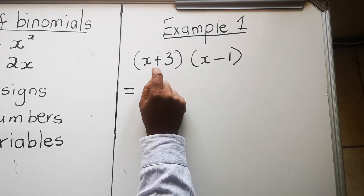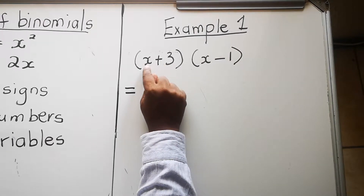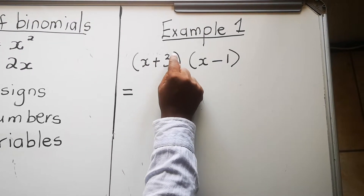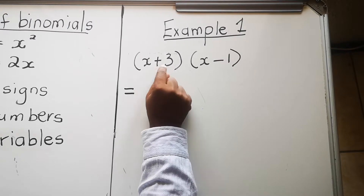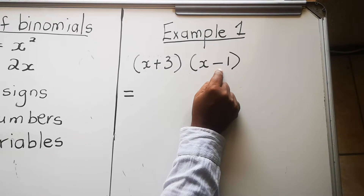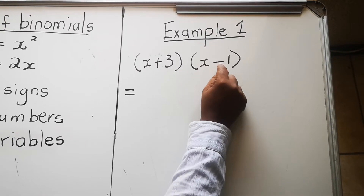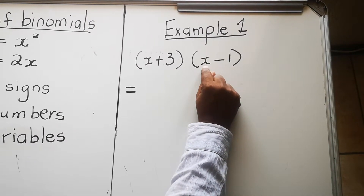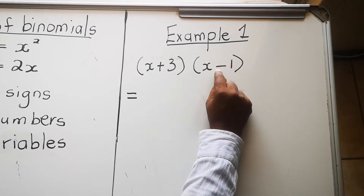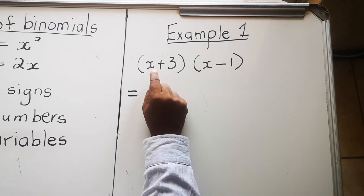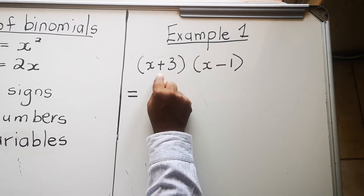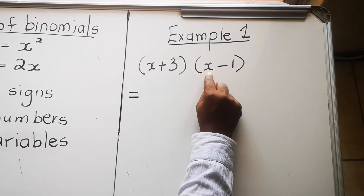A binomial has two terms. How do you find a term? Every time you have something and then a plus or minus, the next thing is another term. So in this bracket we have two terms. In the other bracket we also have two terms — there's an x, then a minus, and then the one, so minus one is the second term. When we say product, we are going to multiply binomials — this is one binomial and this is another binomial.